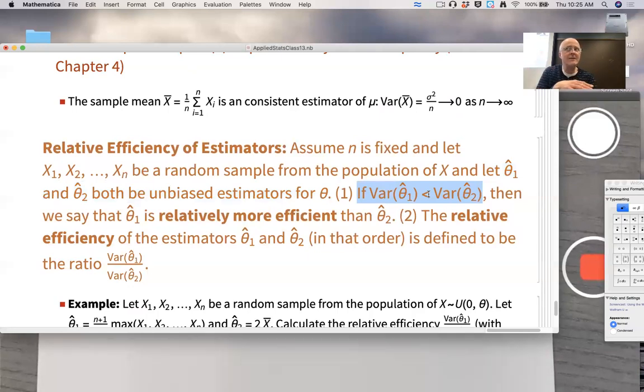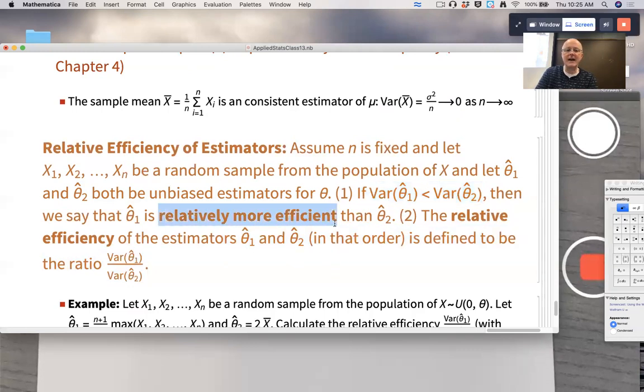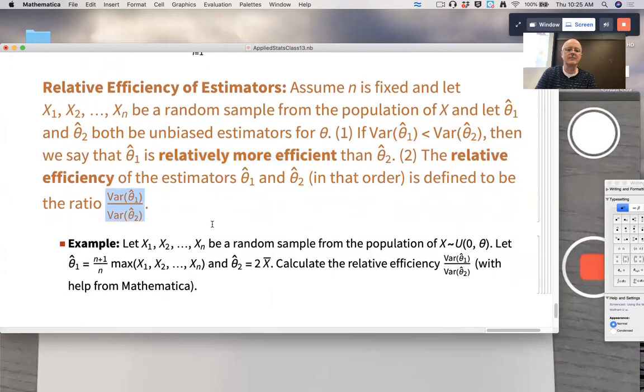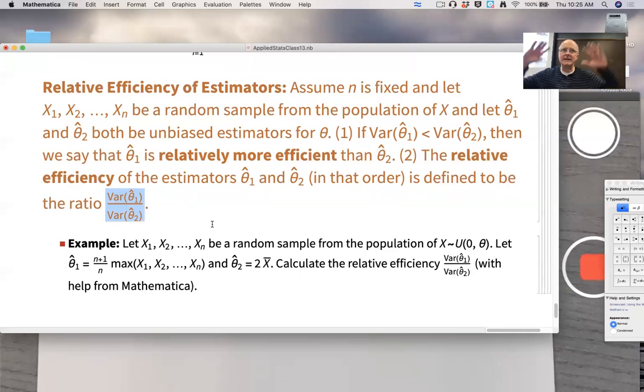At least for that value of N. In theory, for a different value of N, the other one could be more efficient. So this is talking about for a fixed value of N. And the relative efficiency, we say it's relatively more efficient in that context. And the actual relative efficiency is defined to be this ratio. The smaller that ratio is, the closer to zero it is, the more relatively efficient theta 1 hat is compared to theta 2 hat. The big idea is that means theta 1 hat is a better estimator than theta 2 hat. So we'd prefer using theta 1 hat compared to theta 2 hat.